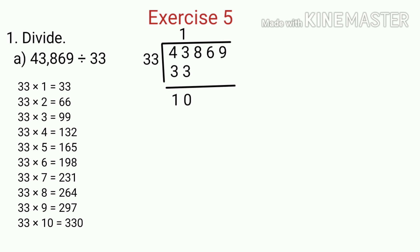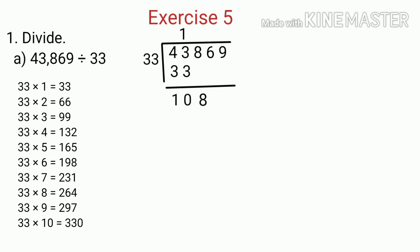Now we bring down the next digit, that is 8. We now compare 108 and 33. Since 108 is greater than 33, we have to find a product of 33 which is equal to, or less than, and nearest to 108. We get the nearest product as 99. So we write 3 in the equation, because 33 multiplied by 3 is 99. And then we subtract 99 from 108, which is equal to 9.